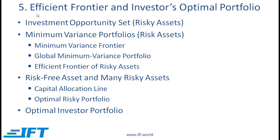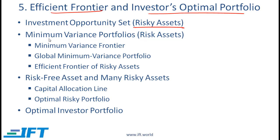We now come to the final section of this very long reading: the Efficient Frontier and the Investor's Optimal Portfolio. Here we will talk about the investment opportunity set in the context of risky assets. Then we'll talk about the minimum variance portfolios — the minimum variance frontier, the global minimum variance portfolio, and the efficient frontier of risky assets.